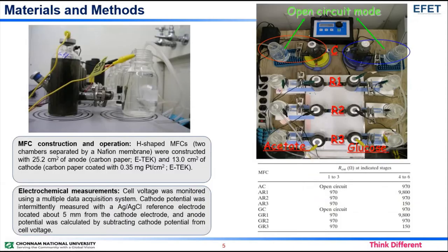I will now talk about the materials and methods. MFC construction and operation: H-shaped MFCs were constructed with 25.2 cm² of anode and 13.0 cm² of cathode. The cell voltage was monitored using a multiple data acquisition system. The cathode potential was intermittently measured with a silver/silver chloride reference electrode located about 5 mm from the cathode electrode. Anode potential was calculated by subtracting cathode potential from cell voltage.